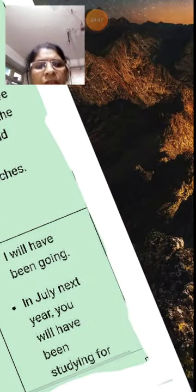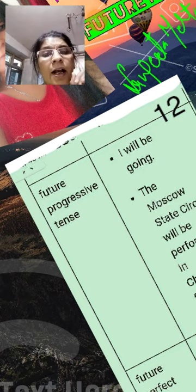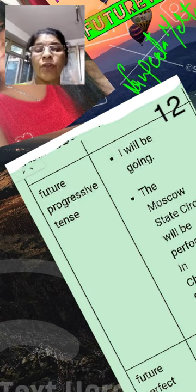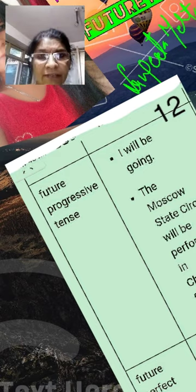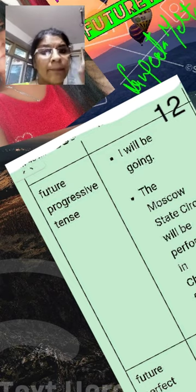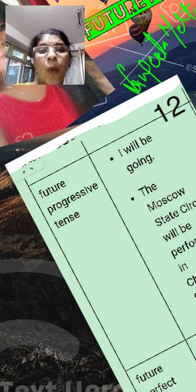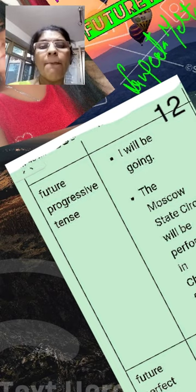In future progressive tense, the subject plus will be plus verb with ING. For example: I will be going. 'I' is the subject, 'will be' is the helping verb, and 'going' is the first form of the verb plus ING. Future progressive tense and future continuous tense are the same.